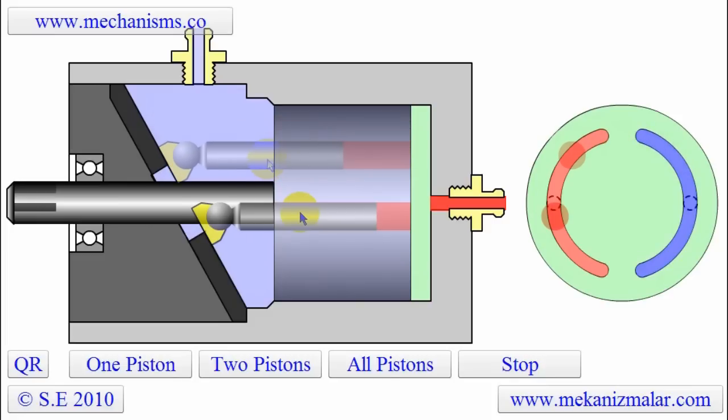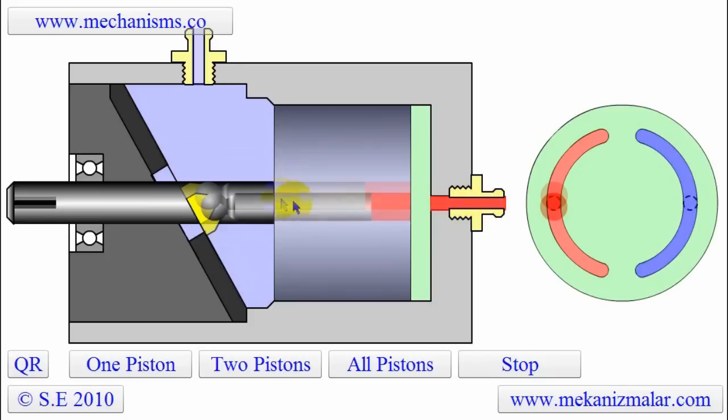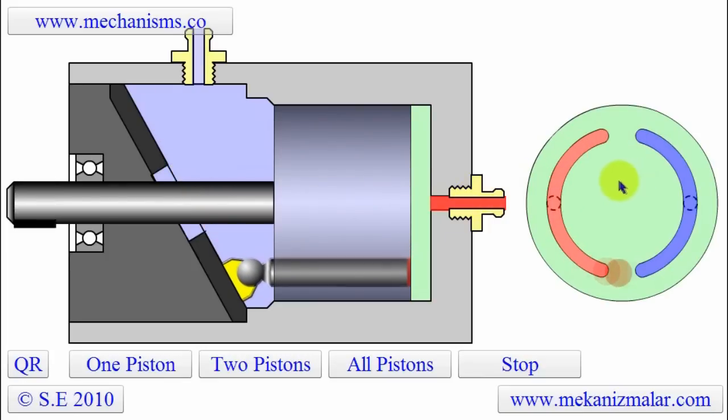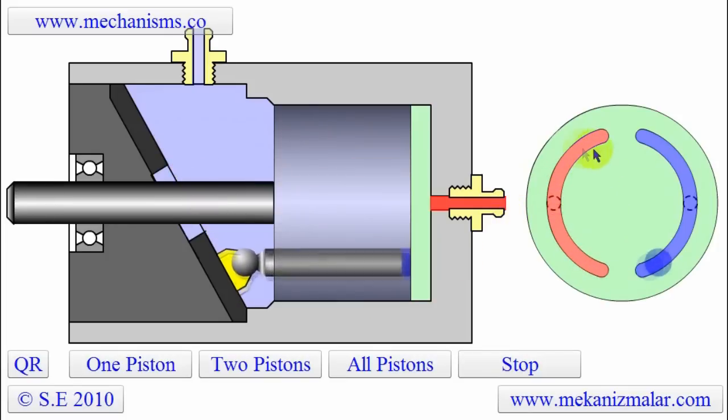The view of this port plate is shown as if an observer is looking at the pump parallel to the rotating shaft from the yellow port location. As you can see, there are two crescent-shaped gaps on this plate that are shown by the red and blue colors.